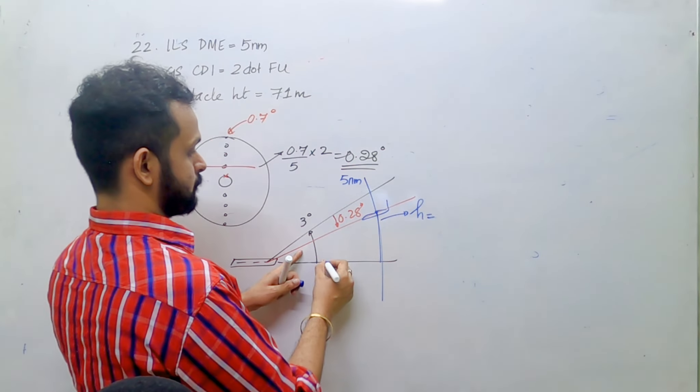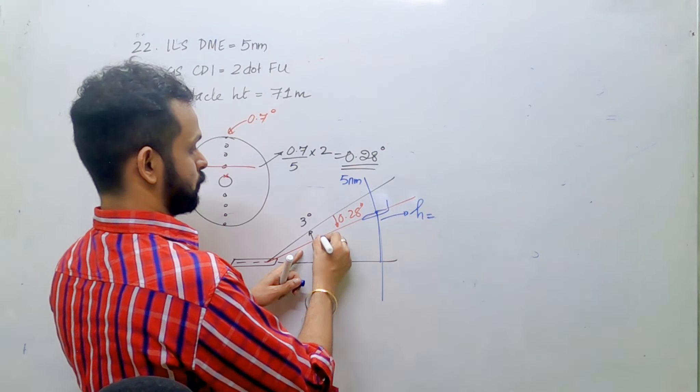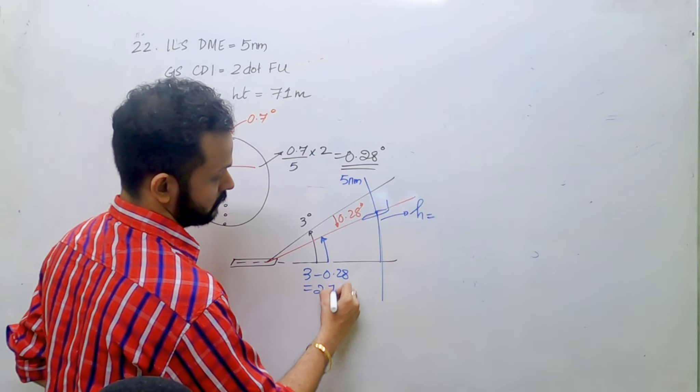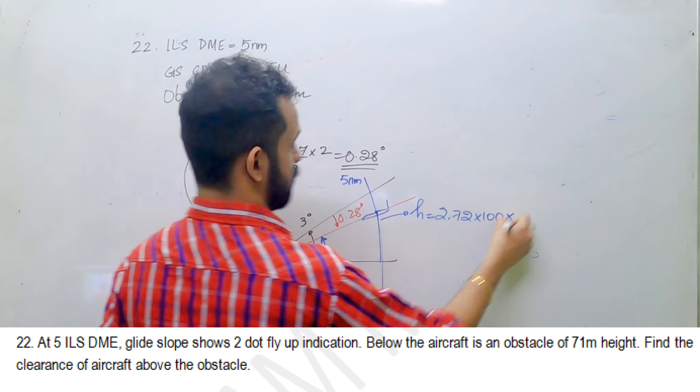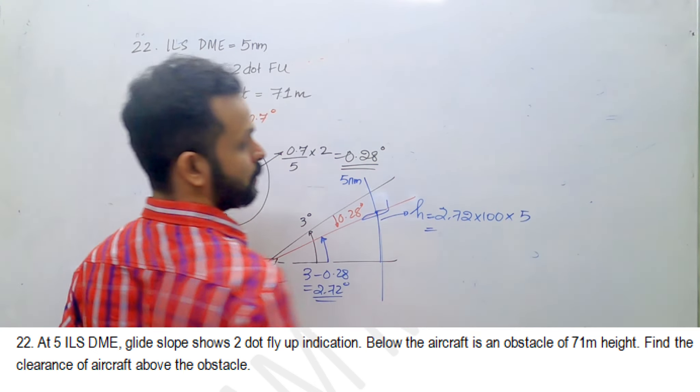Using the normal formula, the current glide slope is 3 minus 0.28 which is 2.72 degrees. So take the glide slope of 2.72, multiply with 100 over 5 nautical miles. How much is that? It is giving me 1360 feet.